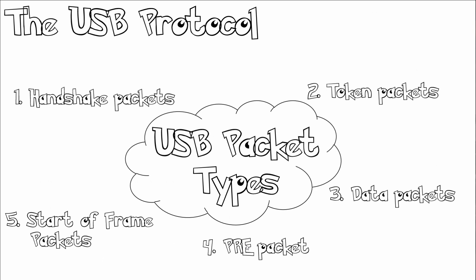Let's take a look at the USB protocol. The USB protocol is extremely complex. Unlike I2C which had one standard protocol, here we have multiple packet types: handshake packets, token packets, data packets, pre-packets, and the start of frame — just some of the packets that form part of the USB protocol.